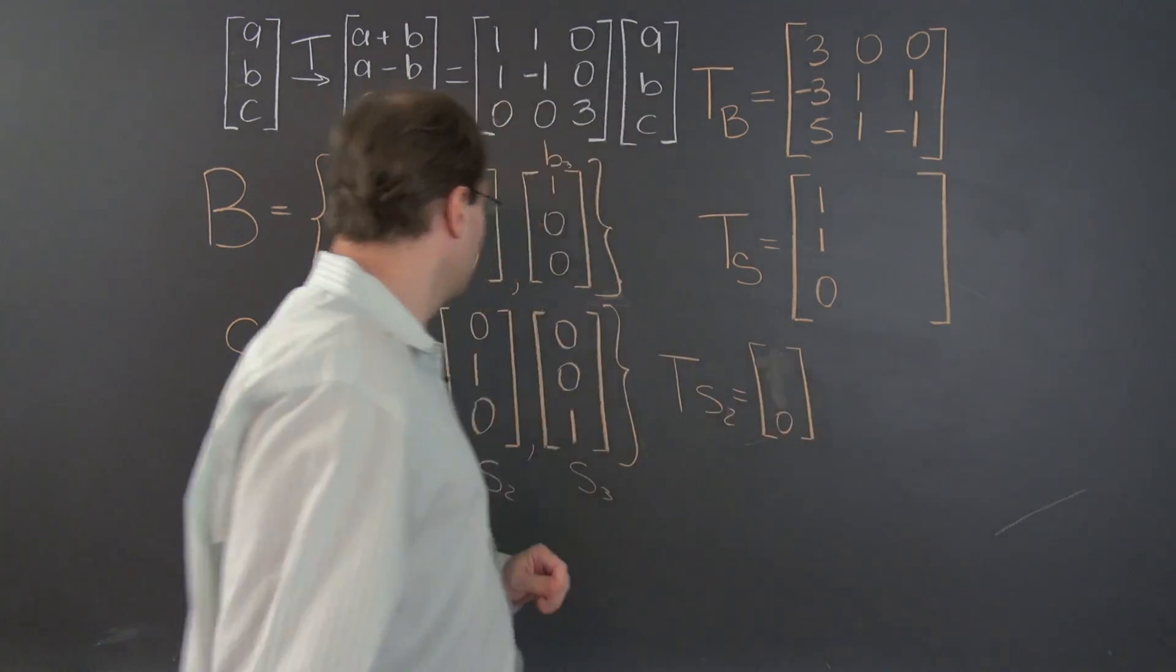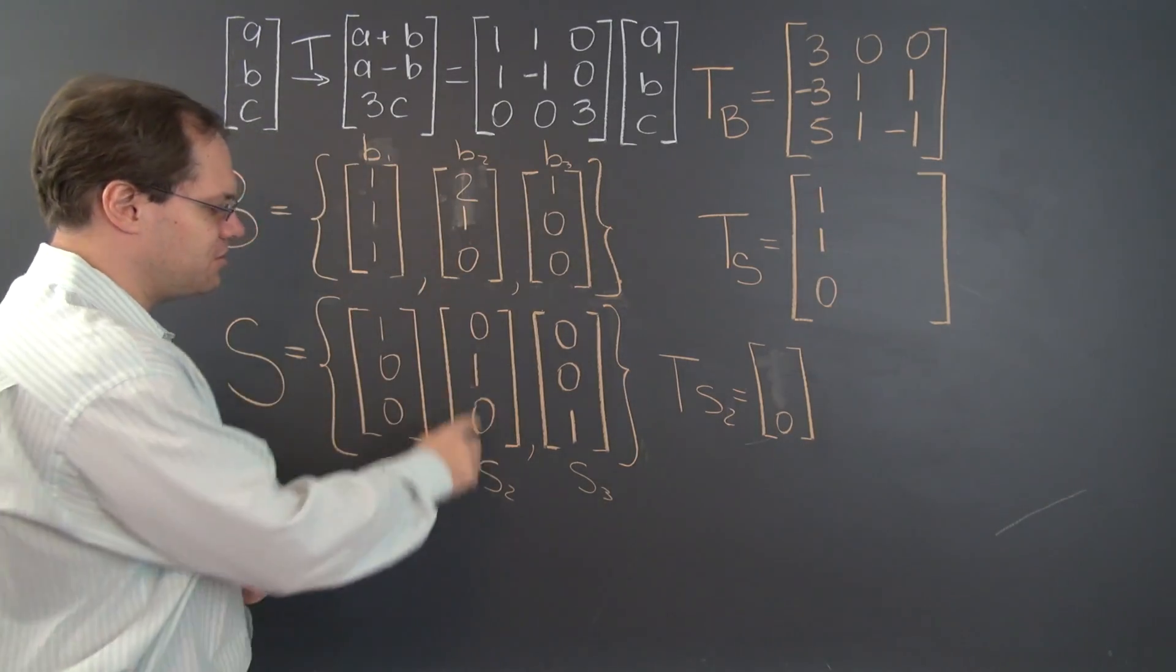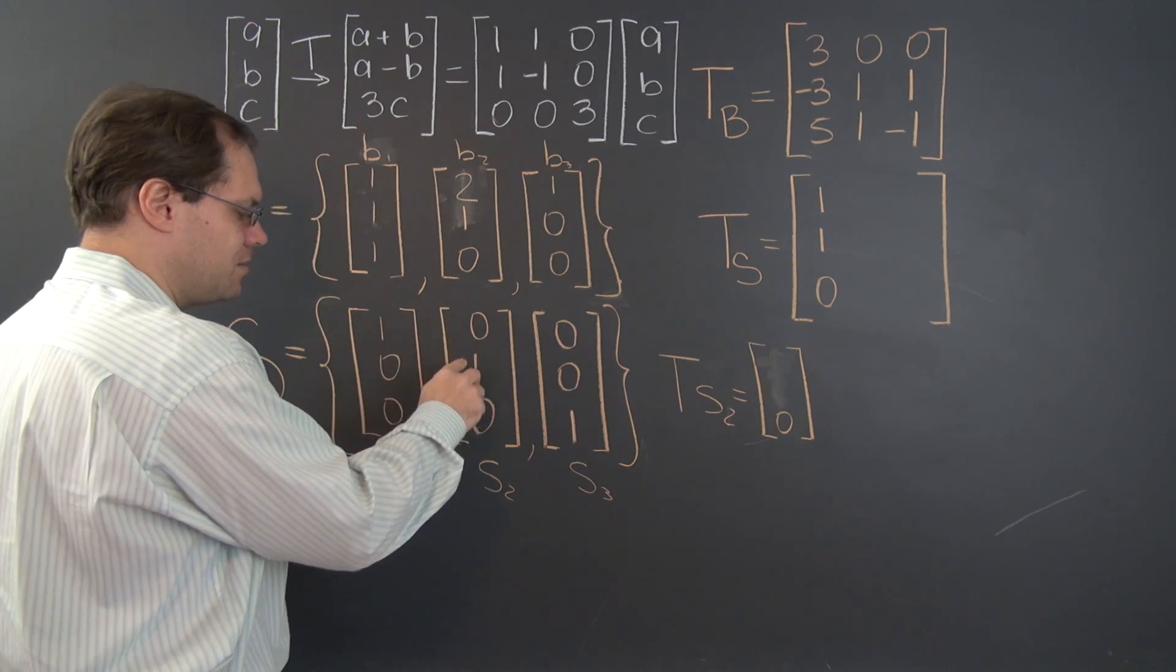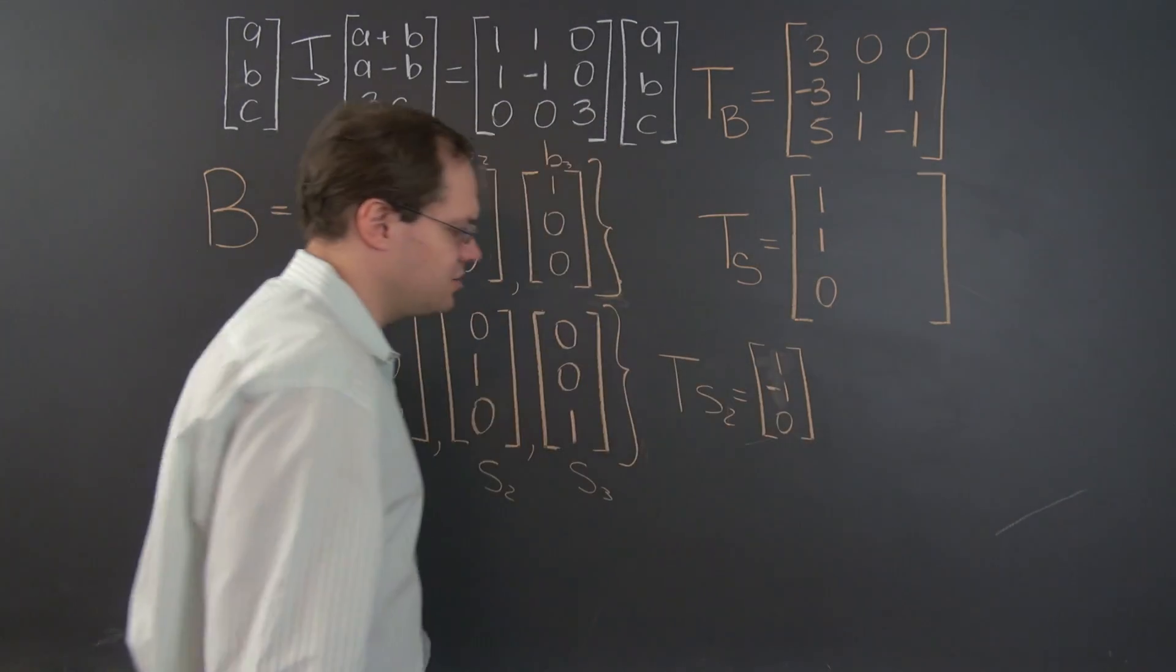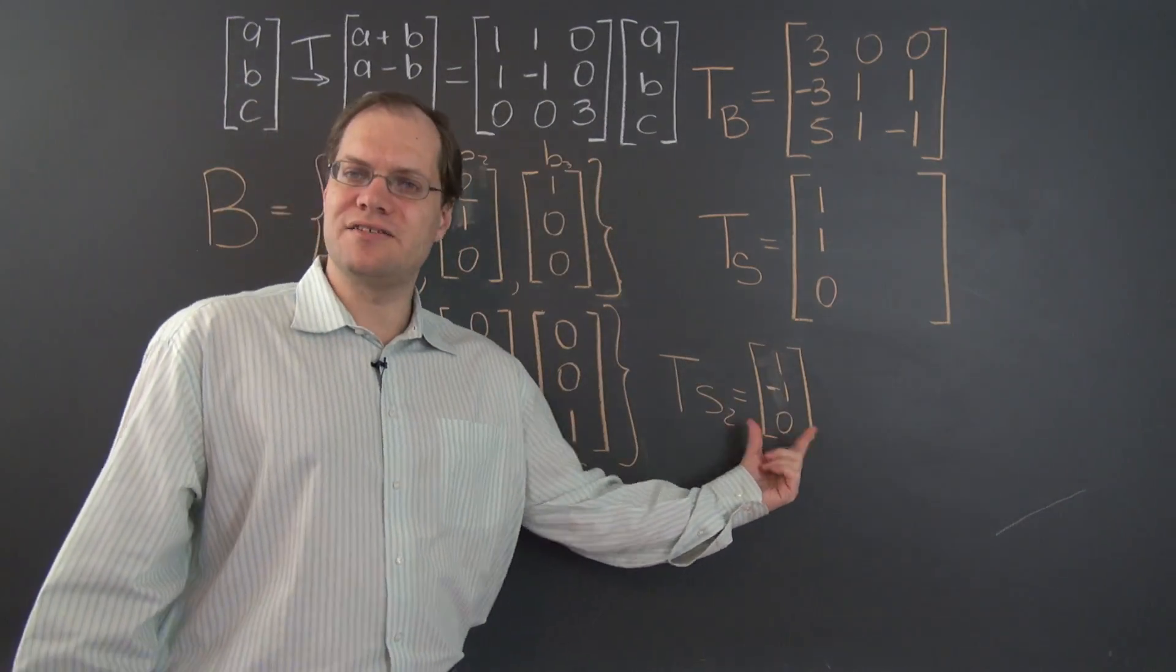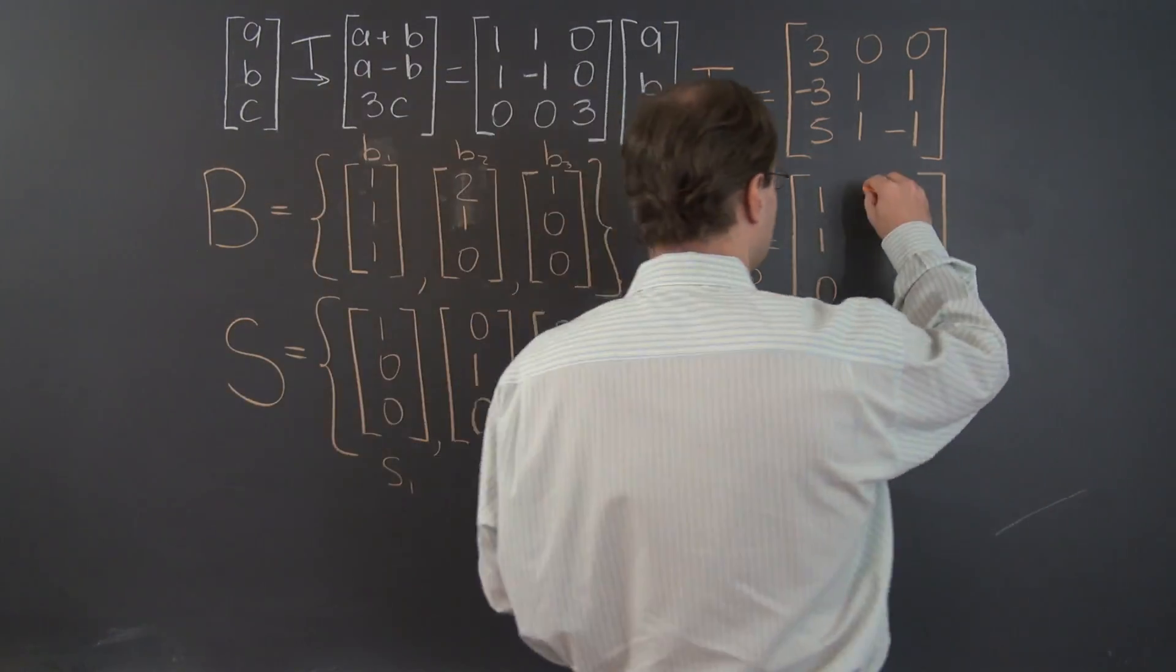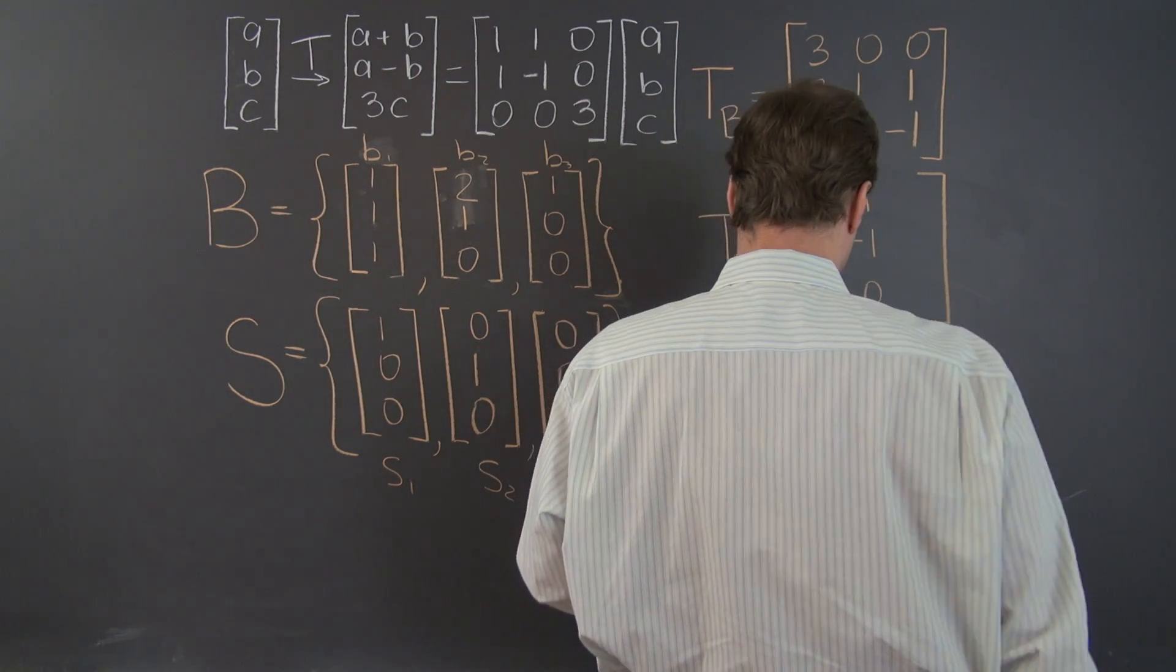And it will be, once again, the sum, the difference, and the last entry multiplied by 3. So the sum is 1. The difference is now minus 1, 1, minus 1, 0, 1, minus 1, 0. Decomposing this vector with respect to the same basis is, once again, 1, negative 1, 0. So that's what goes here, 1, negative 1, 0.